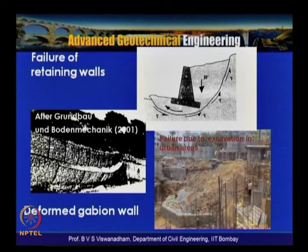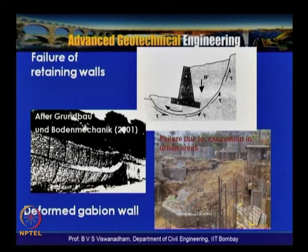A case study shows failure due to excavation close to property lines in urban areas. Excavation can cause distress to existing shallow or deep foundations by inducing eccentric loading or increased stresses, leading to collapse of adjacent buildings when proper protective measures are not taken — as illustrated by a five-storey building failure caused by nearby excavation.